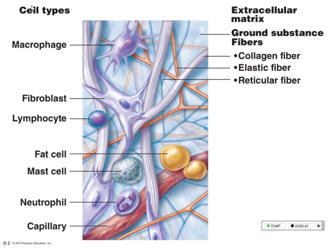Extracellular meaning outside cells. So the other thing we're going to find in this matrix — and again, it can be in many different forms depending on how many ground substances are in it — we're also going to find cells. The other thing we find in connective tissue is a blood supply, capillary beds.